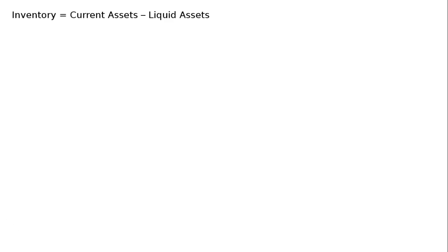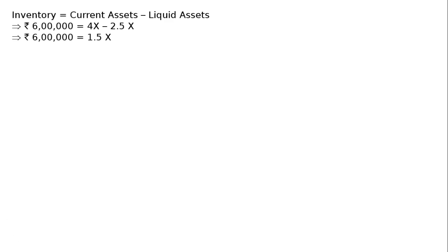Now, inventory is equal to current assets minus liquid assets. Inventory is given as Rs. 6 lakhs. So, current assets 4X minus liquid assets 2.5X implies that 1.5X is equal to Rs. 6 lakhs.